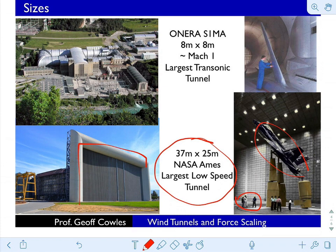Up here is the Onera tunnel — a transonic or sonic tunnel, getting close to Mach 1, with a smaller test section. There are costs associated with getting fluid up to speed and keeping the test section large, both in building costs and power costs to run it. You can see substantial transformers just to take in the power to run this tunnel. They're not cheap to run, but it's cheaper than building full-scale planes that could potentially crash.